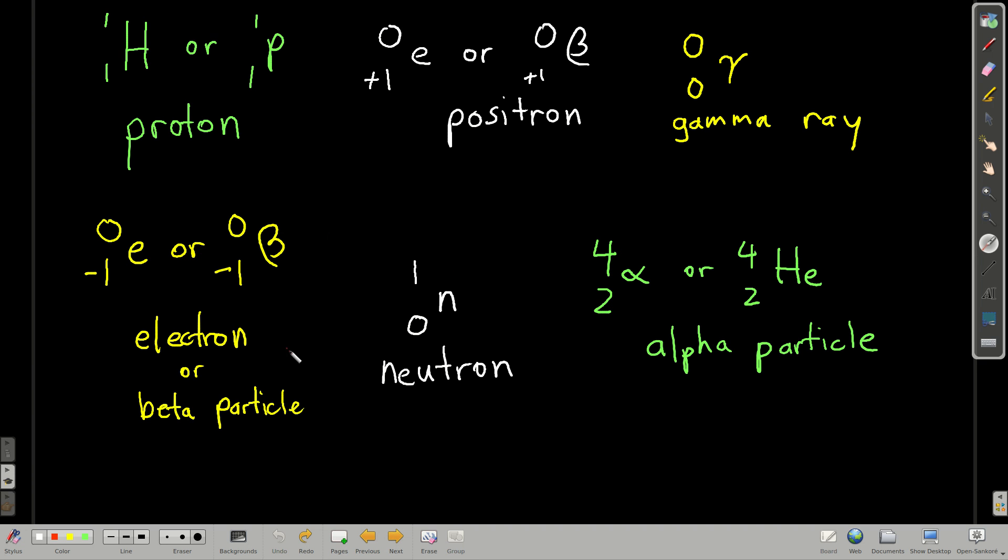So first, let's talk about some subatomic particles. We have the proton and their symbols. You should memorize these, the symbols and the names for these. We have an H, just like for hydrogen, and we have the one to the top, on the top to its left, and one on the bottom to its left, or a P the same way. These mean the same thing. They stand for proton.